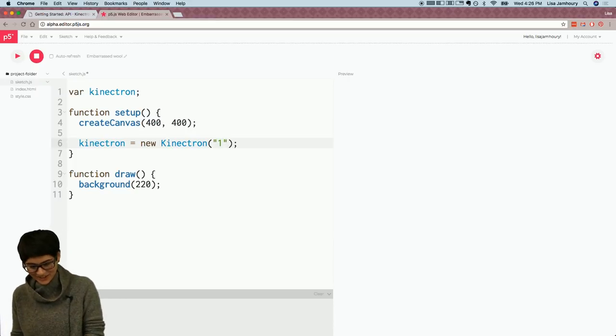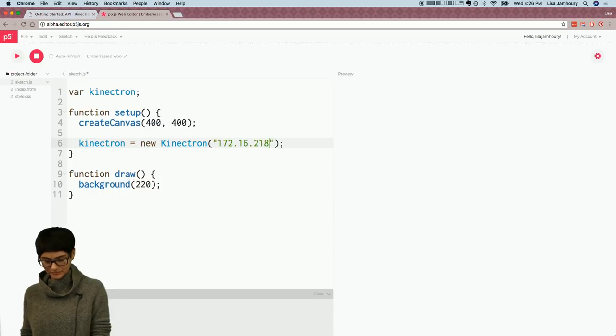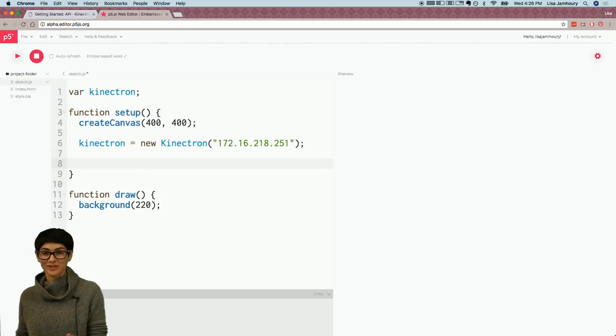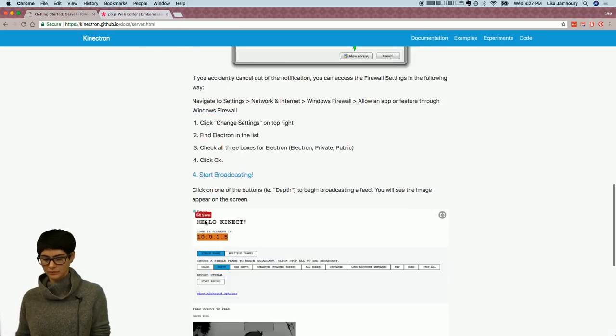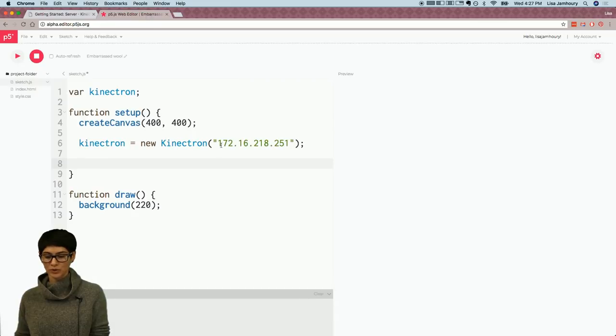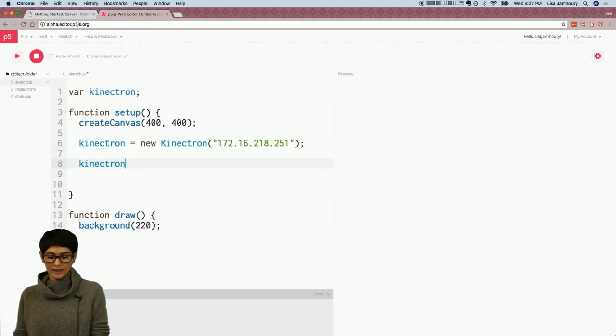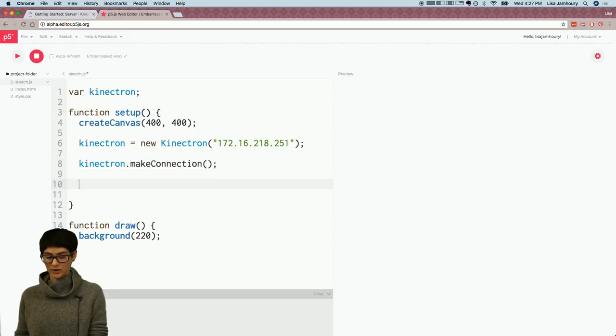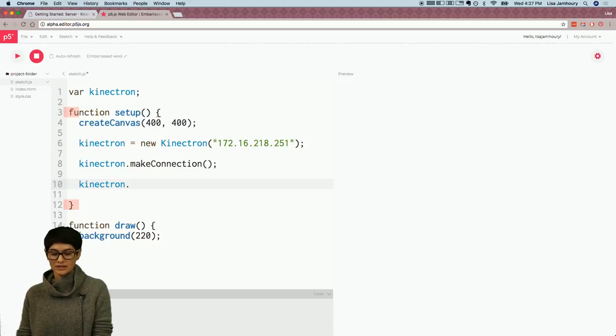So that is 172.16.218.251. This probably won't be running when people are watching this to connect to it, I suppose. No, sorry. You'll have to set up your own. Or maybe I'll set up one for you to connect to and put it in the comments for you. And this is the number that's right at the top of your Kinectron when you open it. Let's see, actually I can show you here. It'll be this number here at the top of your Kinectron server when you open it up. So you just take that number and you put it here in quotes in your new Kinectron. And then you make a connection to that server.